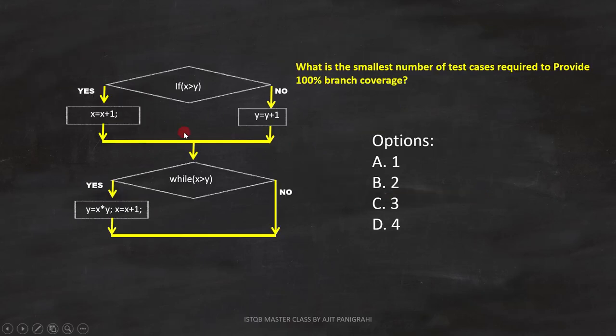Now as per the question, we have to find number of test cases for 100% branch coverage. With this test case, we can cover the true branch. And with this test case, we can cover false branch. That means, with two test cases, we can cover 100% branch coverage. Therefore, answer B, 2 is the answer.